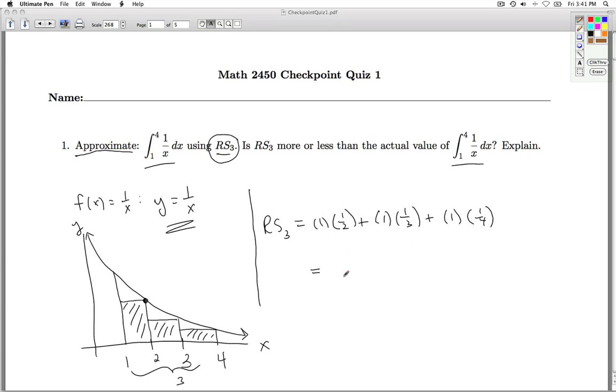So I add these up. The common denominator seems to be 12. So we get a grand final answer of 13 twelfths. And as we mentioned before, this estimate is less than the actual value of the integral because you can see we're missing some area. And so that's number one.